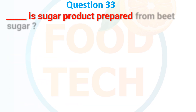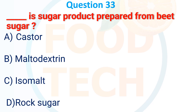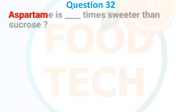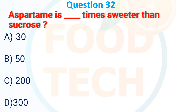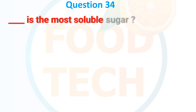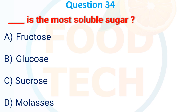Question 29: A sugar product prepared from wheat sugar — A. Castor, B. Maltodextrin, C. Isomalt, D. Rock sugar. The answer is C. Isomalt. Question 30: Aspartame is how many times sweeter than sucrose? A. 30, B. 50, C. 200, D. 300. The answer is C. 200.